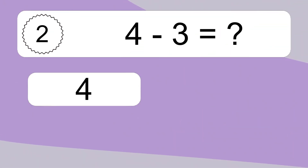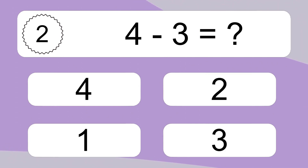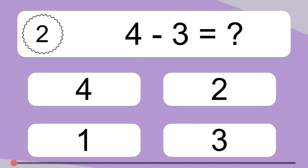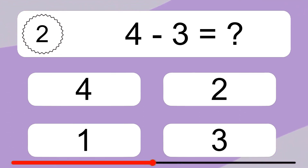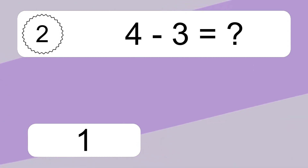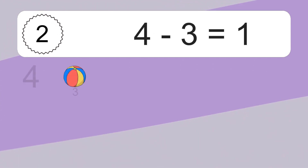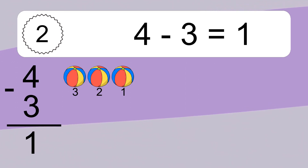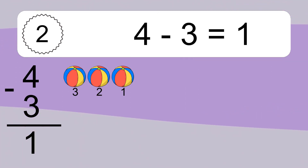4 minus 3 equals what? 4 minus 3 equals 1. Let's count it: 3, 2, 1.